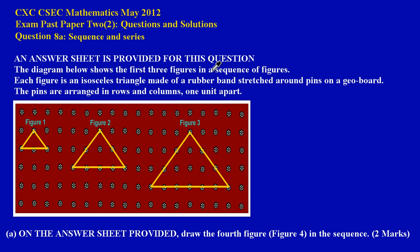If when you have reached this question on the exam paper and you don't see an answer sheet, please ask the invigilator for one. It's very important. Now the diagram below shows the first three figures in a sequence of figures. Each figure is an isosceles triangle made of rubber bands stretched around pins on a geoboard. The pins are arranged in rows and columns, one unit apart.